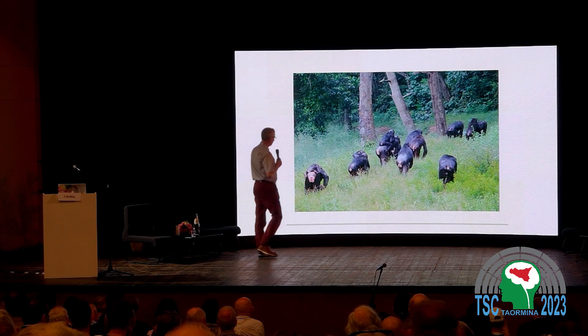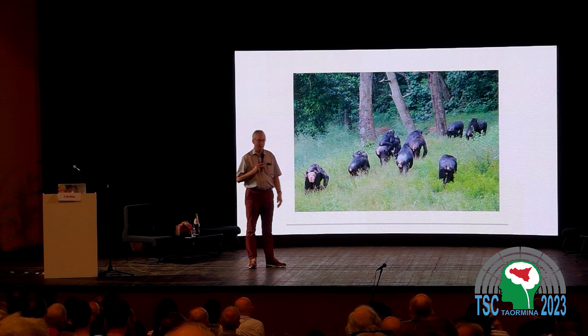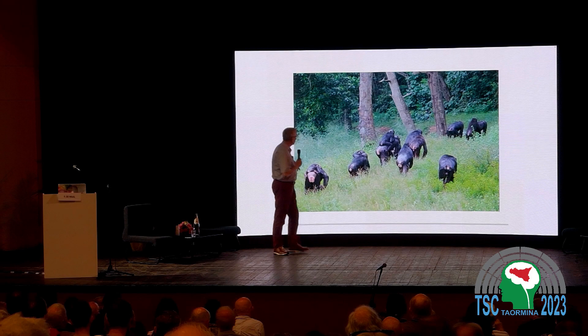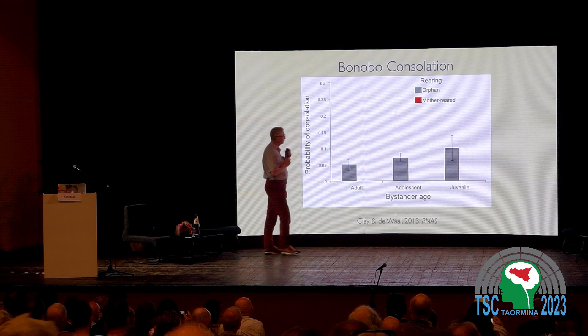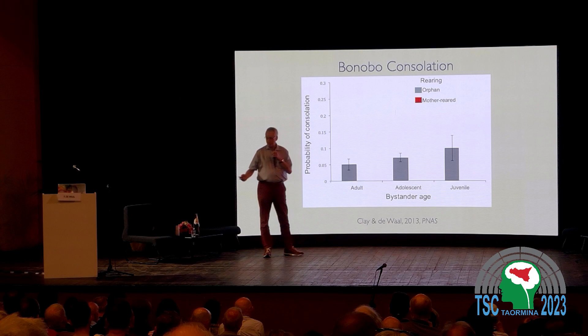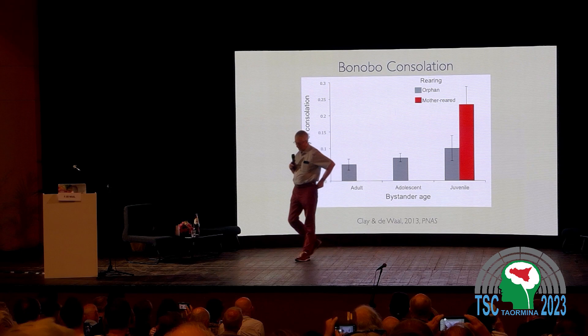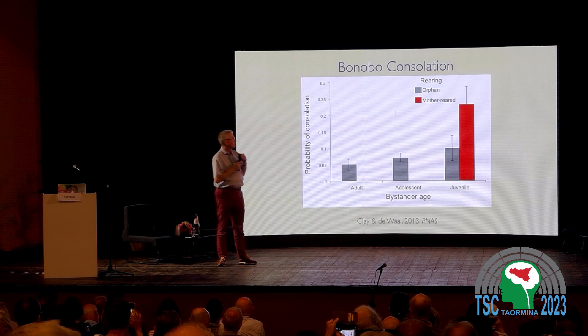We do these studies in a sanctuary where all the bonobos are traumatized orphans — there because of bushmeat hunting in Africa. Traumatized orphans in human studies, like those from Romanian orphanages, have trouble with empathy, and I think our bonobos have trouble with empathy too. We can compare them with moderate individuals born in the colony. Juveniles show consolation behavior twice as much as adults — not because adults lack empathy, but because they become more selective. The biggest difference is that traumatized orphans who lost their mothers to poachers have much less empathy for others.